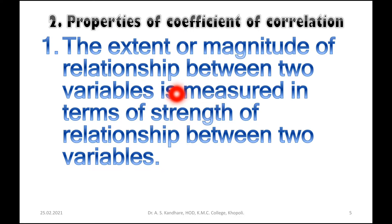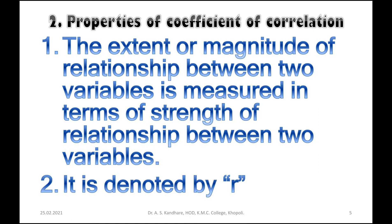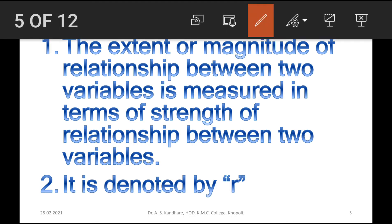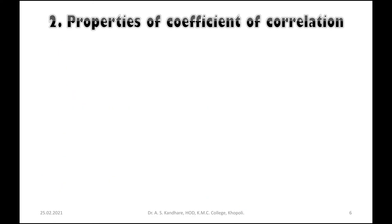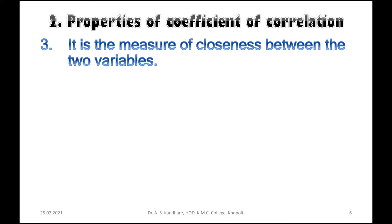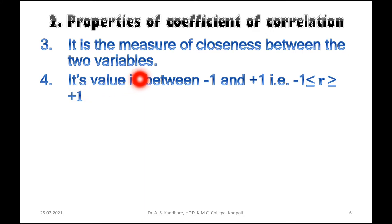The coefficient of correlation is denoted by small r. It is also a measure of closeness between the two variables. Its value is between minus one and plus one.